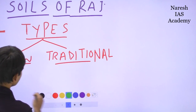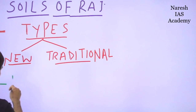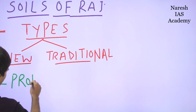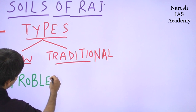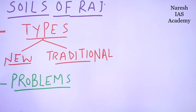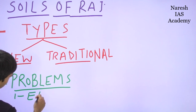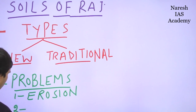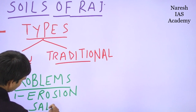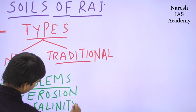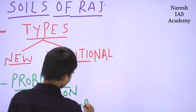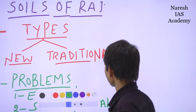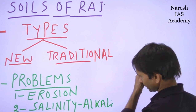Second, the problems of soil in Rajasthan - what are the major problems of soils in Rajasthan. One is soil erosion, the second is salinity and alkalinity. Through the map of Rajasthan we can locate the geographical distributions of soils.